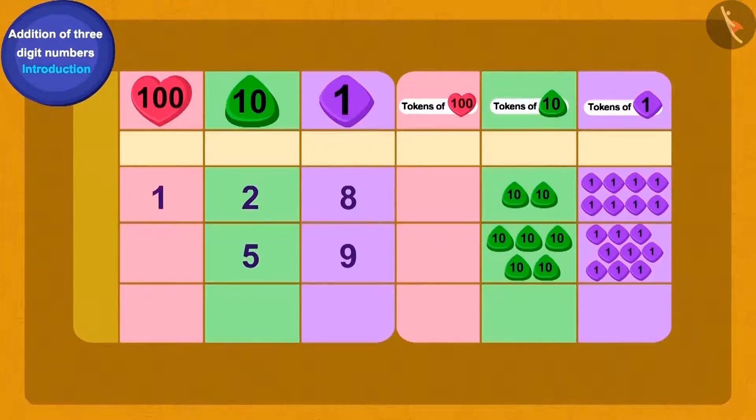First, we will write 128 and 59 using tokens. Is this correct, children? We have a total of 17 tokens of ones. Now, how do we write this? We can add 10 of ones tokens and get 1 token of tens. How many ones tokens left? We have 7 ones tokens left.